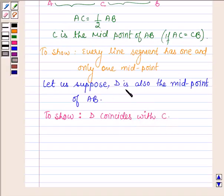Now, since we have supposed D is also the midpoint of line segment AB, therefore in question 4, we have AD is equal to half of AB. And also we have AC is equal to half of AB. Let this be equation number 1, and let this be equation number 2.